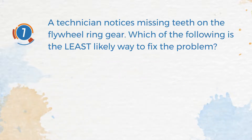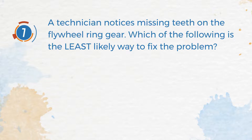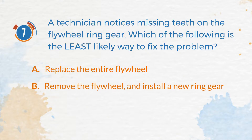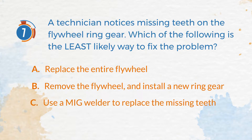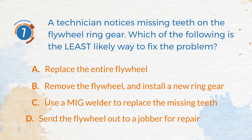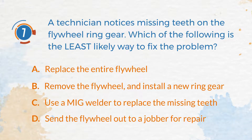Number 7. A technician notices missing teeth on the flywheel ring gear. Which of the following is the least likely way to fix the problem? A. Replace the entire flywheel. B. Remove the flywheel and install a new ring gear. C. Use a MIG welder to replace the missing teeth. D. Send the flywheel out to a jobber for repair.